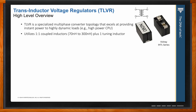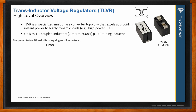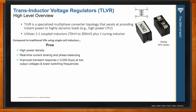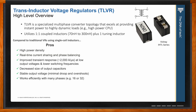TLVRs also implement an additional tuning inductor to set the slew rate. Compared to traditional voltage regulators using single-coil inductors, TLVRs have higher power density, allow for real-time current sharing and phase balancing, and have exceptional transient response — 2,000 amps per microsecond is not unusual — at low output voltages and lower switching frequencies. They also enable smaller output capacitors and ensure stable output voltage with minimal voltage droop and overshoot.